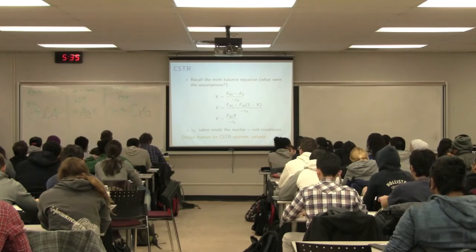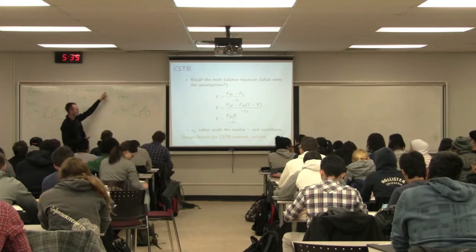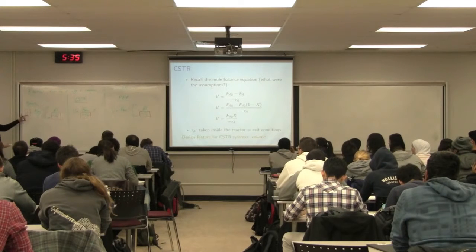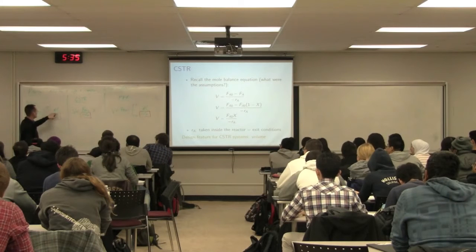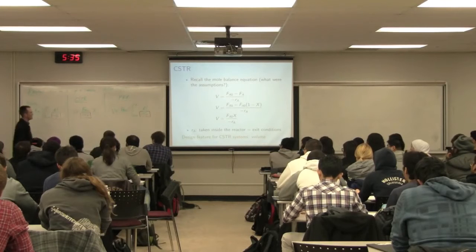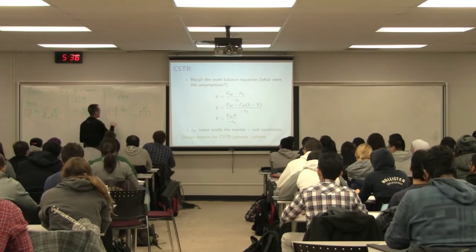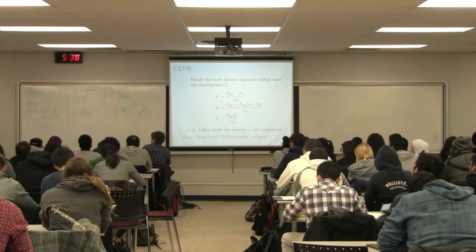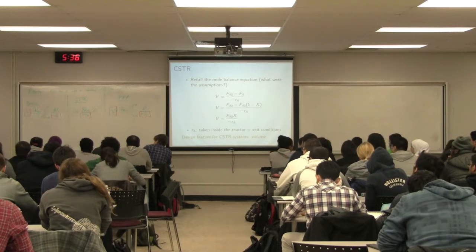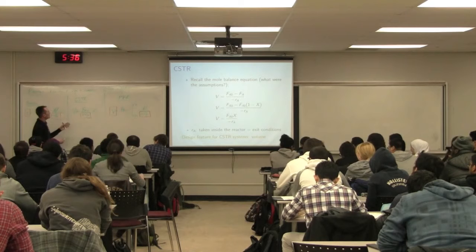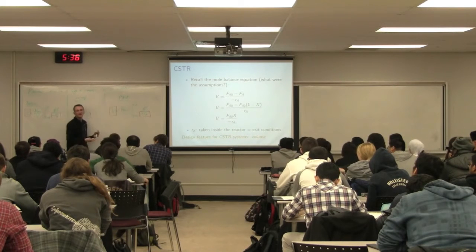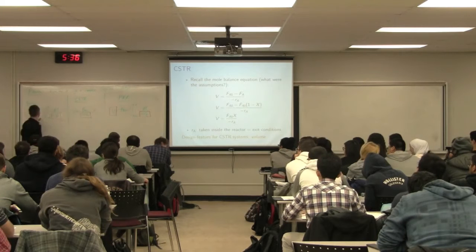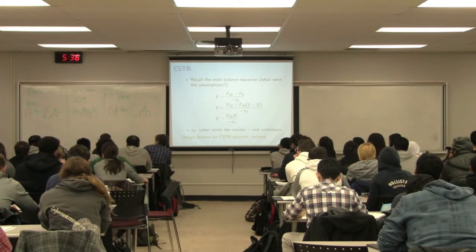The PFR and the batch equations are identical — what's in the integral is the same for both: dX over minus RA. For a batch reactor, the key design variable is time, not volume. We get time as a function of NA0, volume V, and the integral from zero to final conversion of dX over minus RA. For the PFR, the key design variable is volume. So if you can design a PFR using the graphical approach, you can design a batch reactor simply by replacing FA0 with the appropriate batch variables. We'll only look at CSTRs and PFRs going forward.